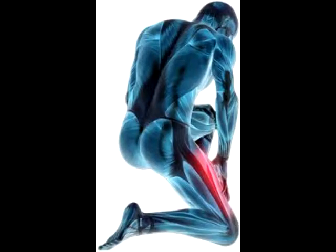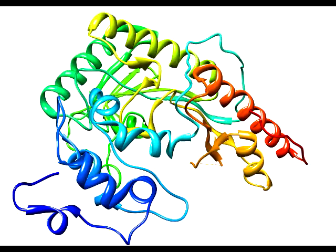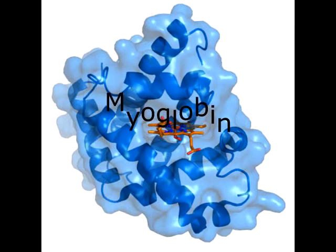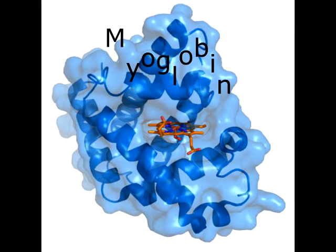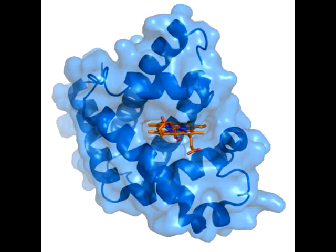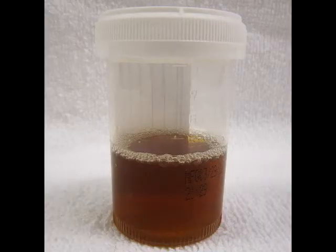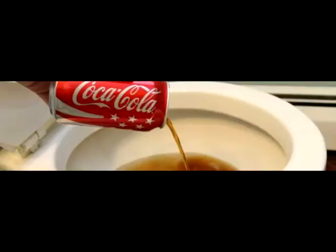Rhabdomyolysis involves skeletal muscle deterioration that leads to cell death. Creatinine kinase, an enzyme abundant in skeletal muscle, and myoglobin, a protein also prominent in skeletal muscle, are released in high levels during rhabdo. Therefore, elevated serum CK levels and myoglobinuria — myoglobin in the urine — which can make urine look reddish-brown or coke-like, are the primary diagnostic indicators for the disease.